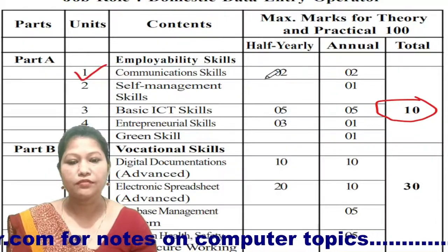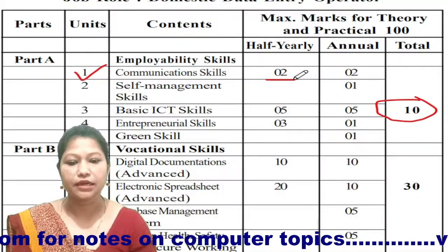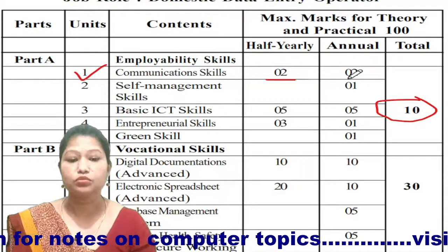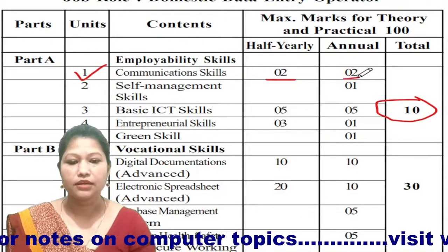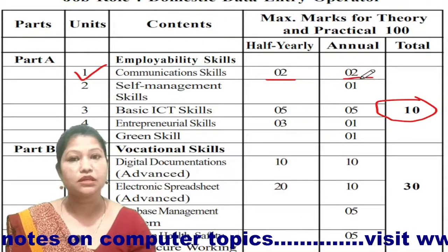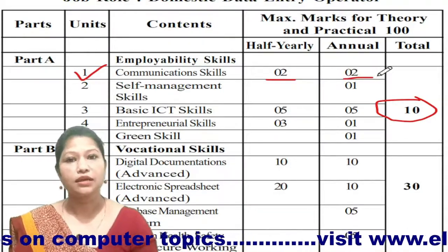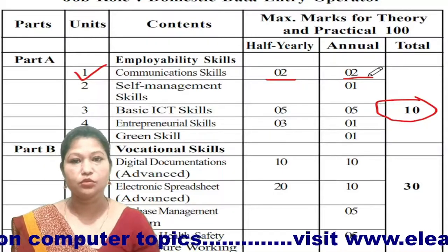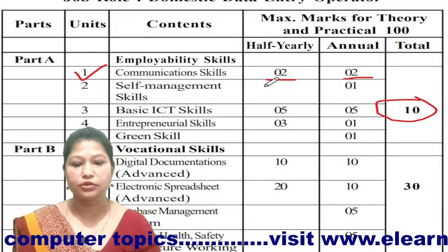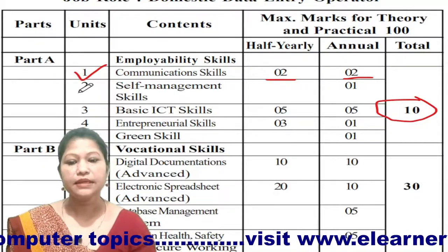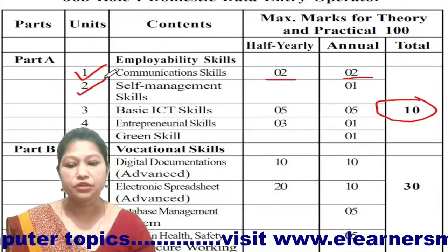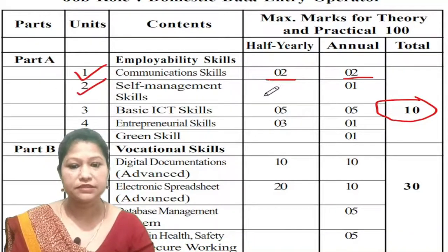Unit number 1: you will have a half-year exam with two marks, and two marks for the annual exam and HSLC exam as well, making two marks each. Next, Unit number 2 is Self-Management Skills.